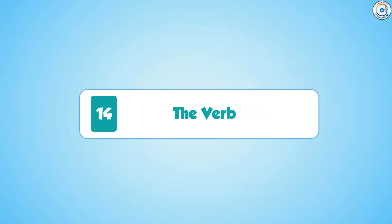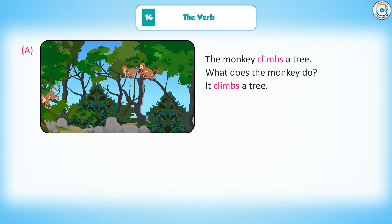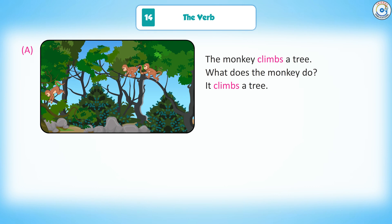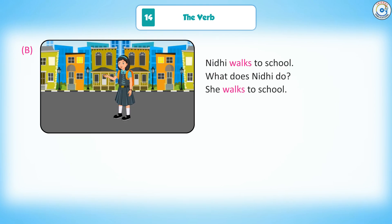Chapter 14: The Verb. A. The monkey climbs a tree. What does the monkey do? It climbs a tree. B. Nidhi walks to school. What does Nidhi do? She walks to school.